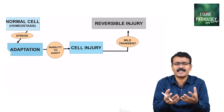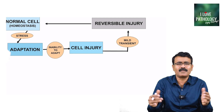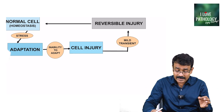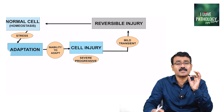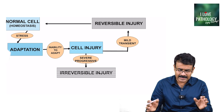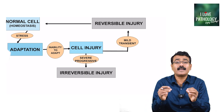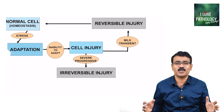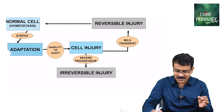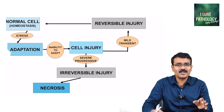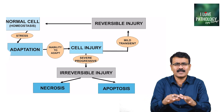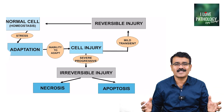When the injurious agent is taken off, the cell can return back to normalcy — this is reversible cell injury. If the injury is very severe and progressive, then it results in irreversible injury. There are two major forms of irreversible injury: necrosis and apoptosis. This is the whole life of the cell.